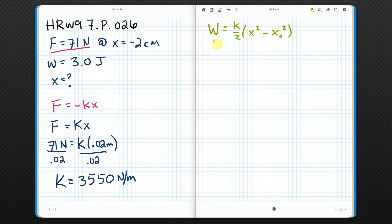This is what I'm doing. Well, I know that when I move the block from x0 to x, I do 3 joules of work. So I do 3 joules equals k, which is 3550 newtons per meter over 2. I don't know x. That's what I'm trying to figure out. But I do know that I started at negative 2 centimeters because it said that I did this work from that point. So I get negative 0.02 squared.